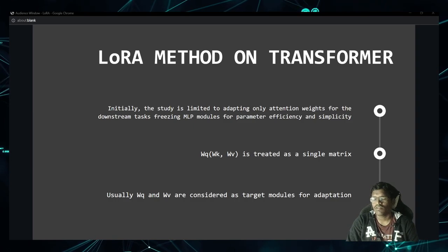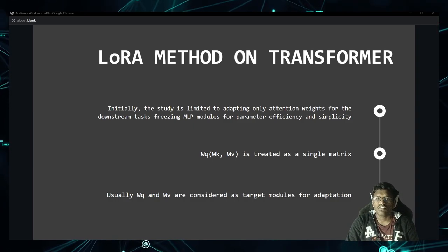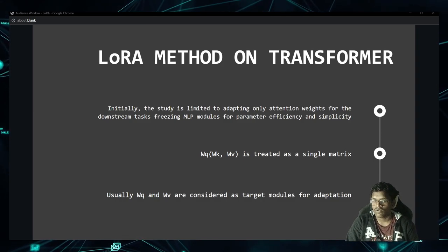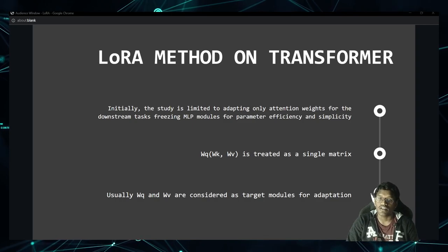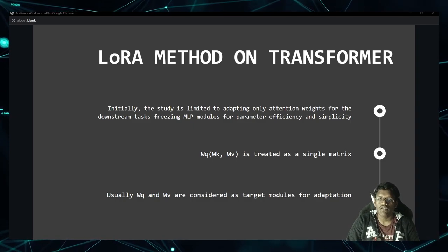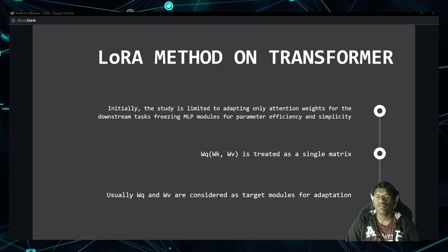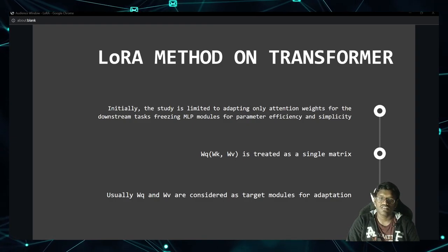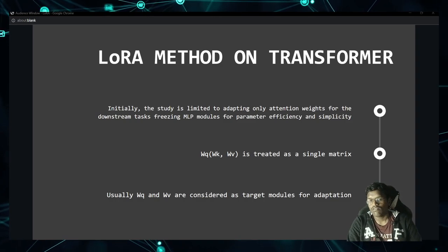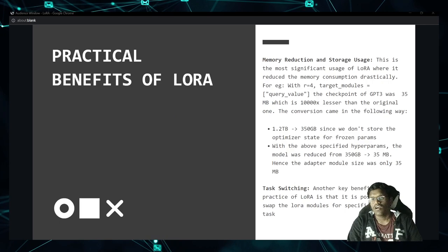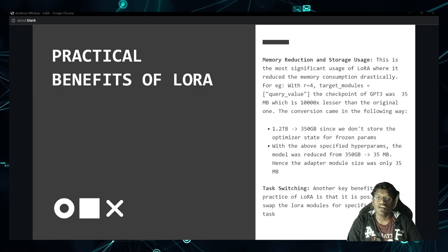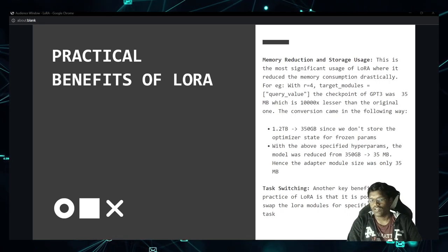The attention weights WQ, WK, WV were all considered as a single matrix. When adapting or fine-tuning, they considered only WQ and WV — query and value — for their adaptation, using only those weights for fine-tuning.